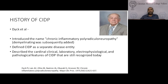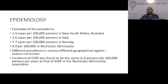They described the cardinal clinical, laboratory, electrophysiological, and pathological features which are still recognized today. Looking at the epidemiology, CIDP has a varying prevalence: 1.9 in Australia, 3.6 in Italy, and 8.9 in the US Minnesota cohort. Different prevalence rates exist and the reason is not known.